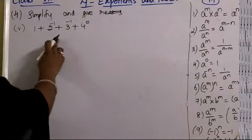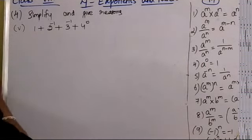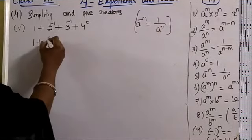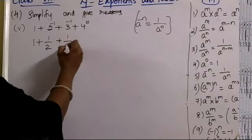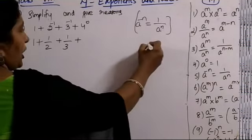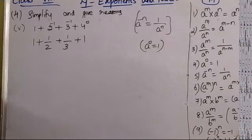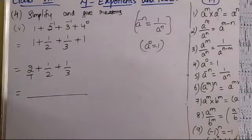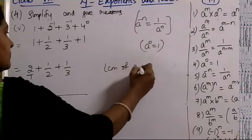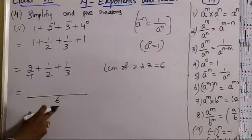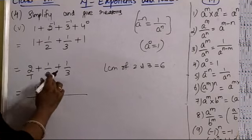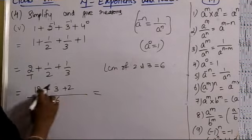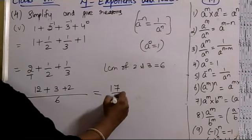Fifth one: 1 + 2^(-1) + 3^(-1) + 4⁰. Using a^(-n) = 1/a^n: 2^(-1) = 1/2, 3^(-1) = 1/3, and 4⁰ = 1. So: 1 + 1/2 + 1/3 + 1 = 2 + 1/2 + 1/3. Taking LCM of 1, 2, 3 as 6: (12 + 3 + 2)/6 = 17/6. The answer is 17/6.